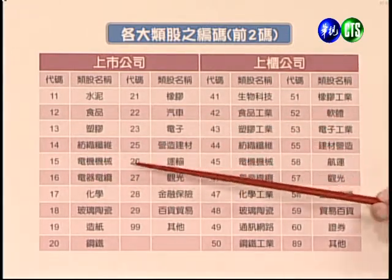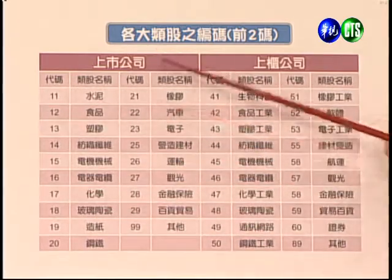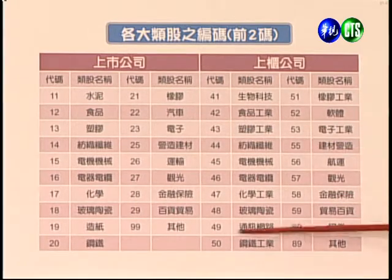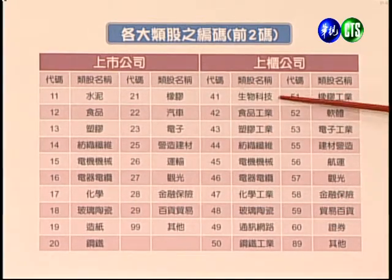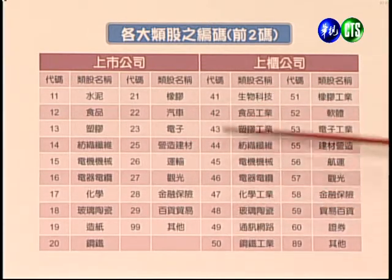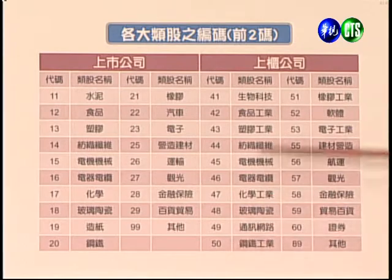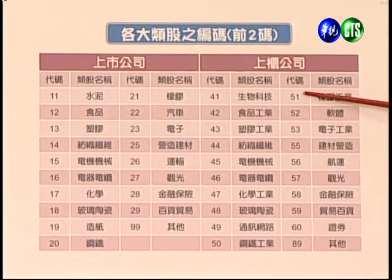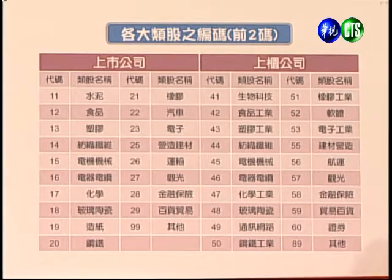台灣證券交易所有1300到1400家上市櫃公司。特別是一些新型公司如生技公司陸續申請上櫃，上櫃公司的代碼部分以4開頭、5、6、8這些代碼作為前兩碼。後兩碼則能更細地分辨是哪個產業。